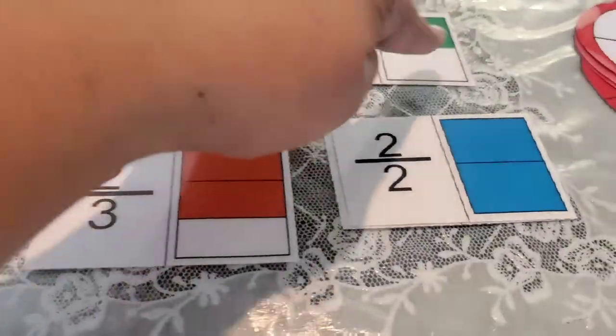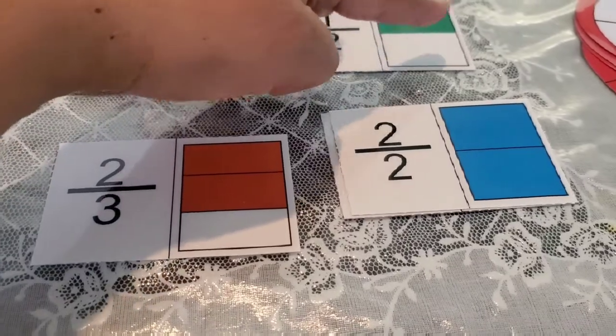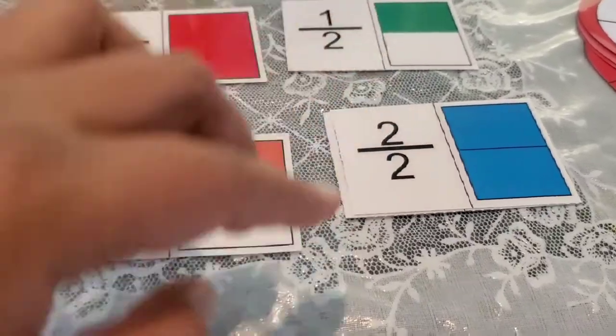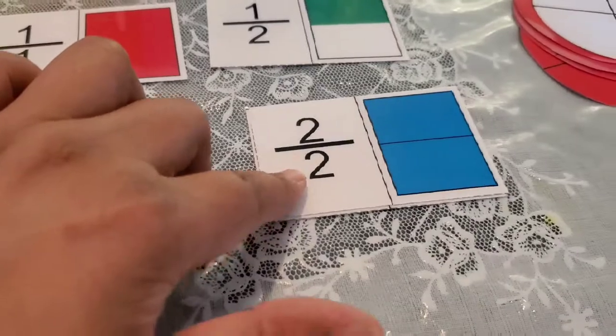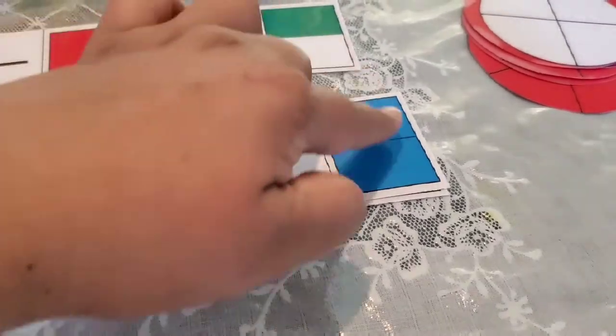And this shows you two over two. The bottom number is telling you it's two pieces, and the top number is telling you that two pieces have been shaded, so it's two over two.